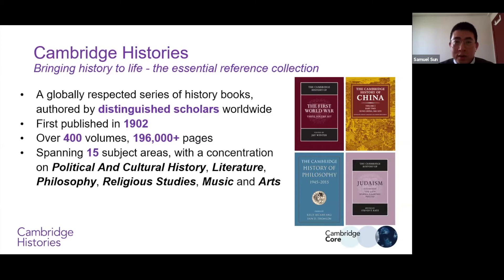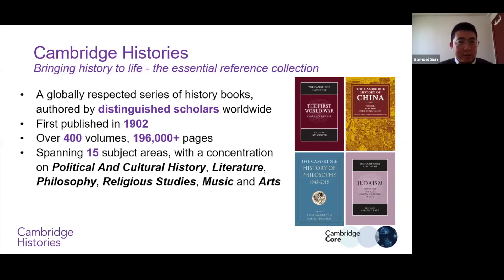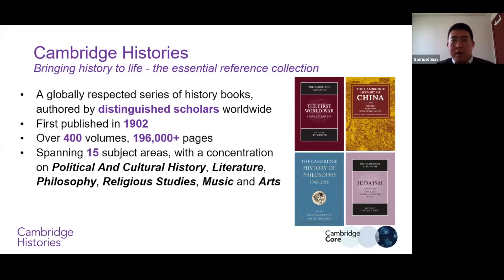Cambridge Histories has about 100 titles in the series. The whole series was first published in 1902 and currently consists of about 400 volumes. This is not only about history — it covers a wide range of topics including politics, culture, literature, philosophy, religion, music, and arts. It is an essential reference collection for all students focused on history and related subjects.